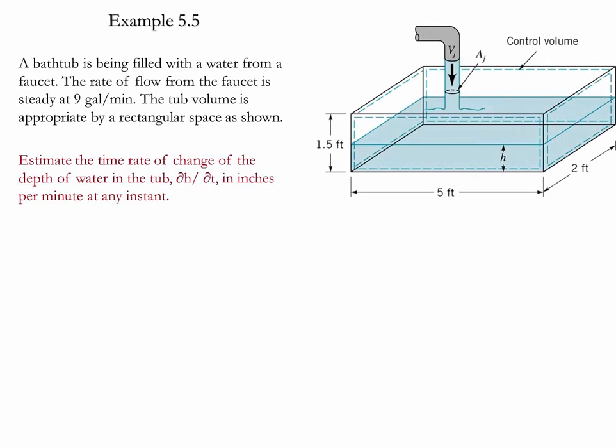Example 5.5. In this example we have a bathtub which is filled with water from a faucet. The rate of flow of the faucet is steady and is given at 9 gallons per minute. The tub volume is approximated by a rectangular space which is shown. The problem is to estimate the time rate of change of the depth of the water, dh/dt, in inches per minute at any instant. Notice that because this problem requires evaluating a quantity per unit time, it is considered a non-steady problem.